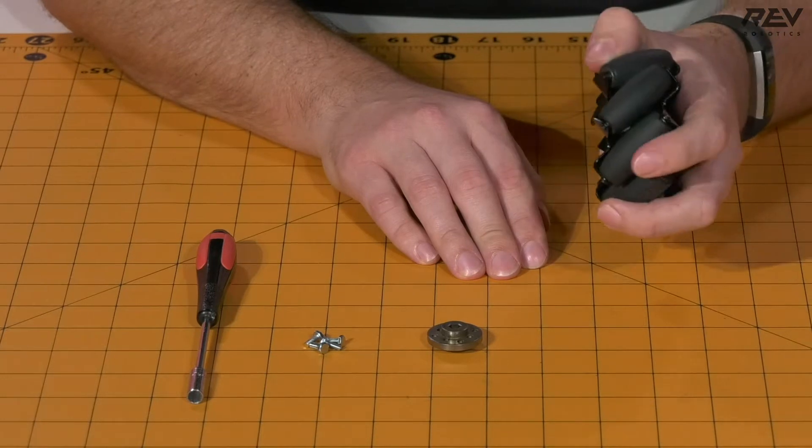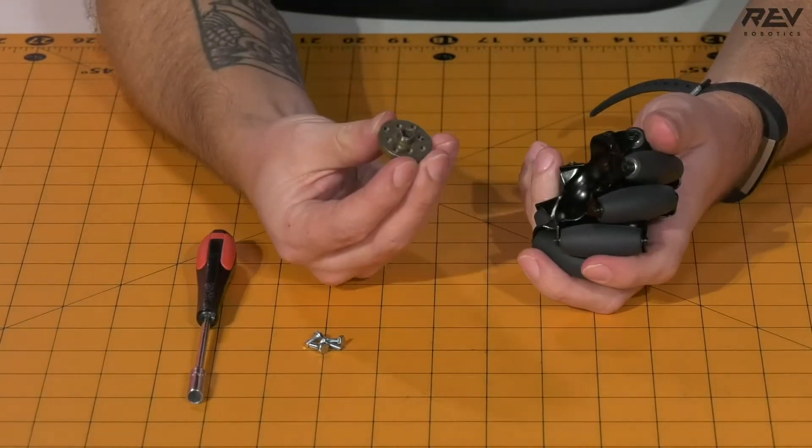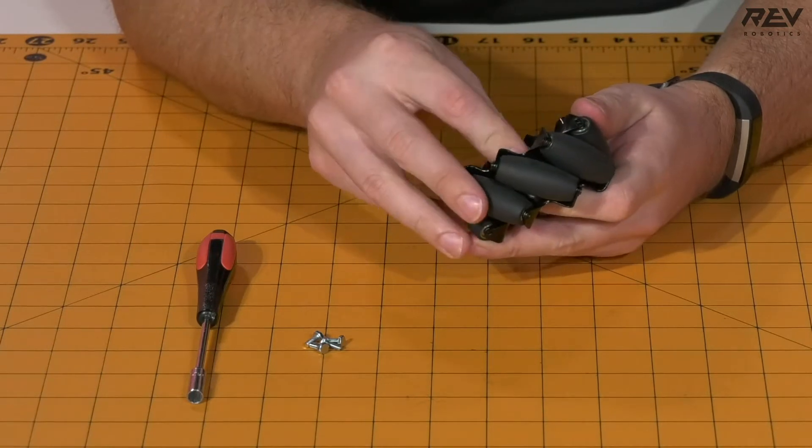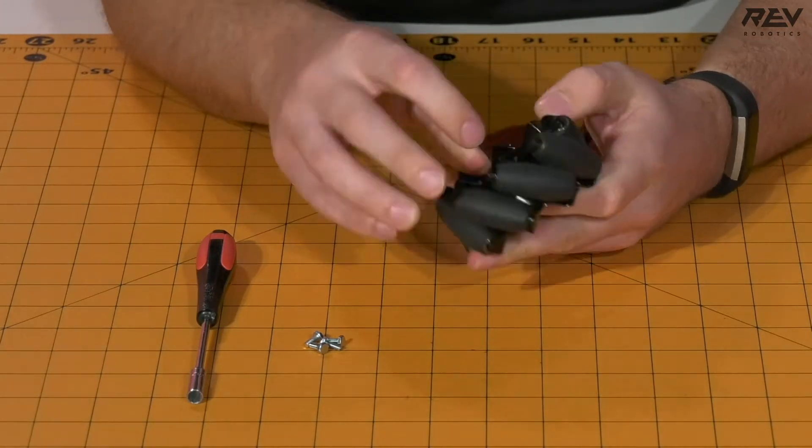What we're going to end up doing is you want to take the Mecanum wheel along with your universal hex adapter and seat that hex adapter into the hole.